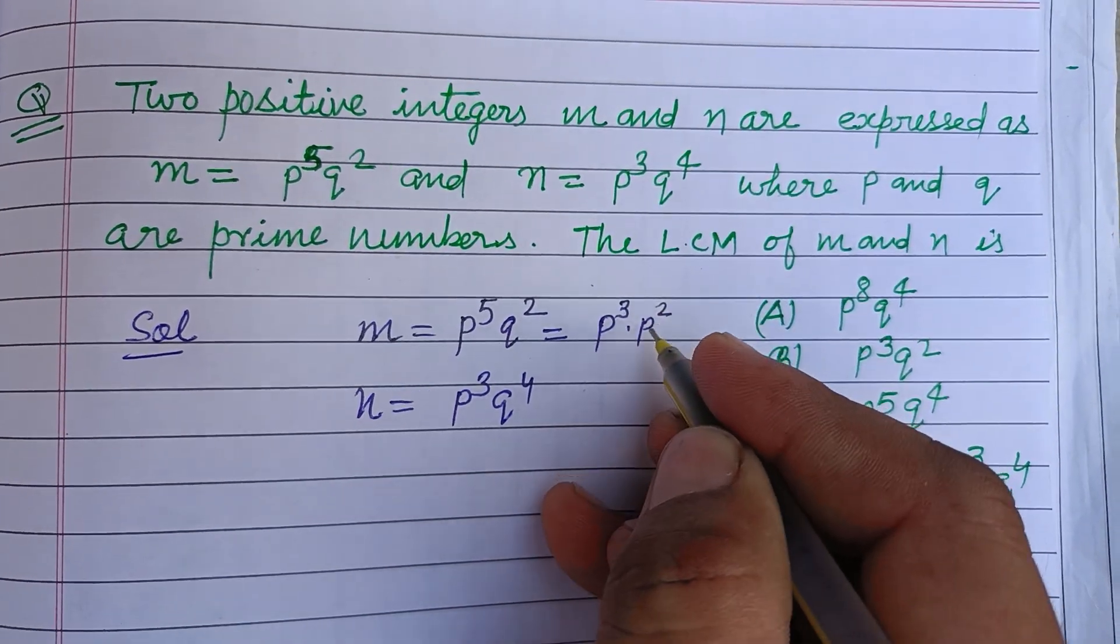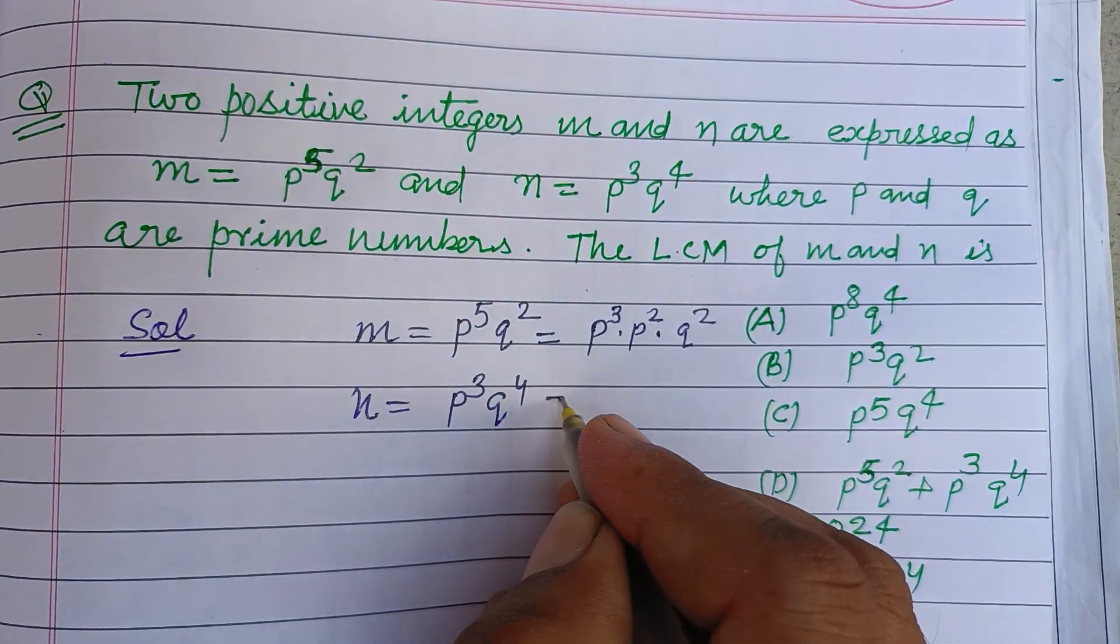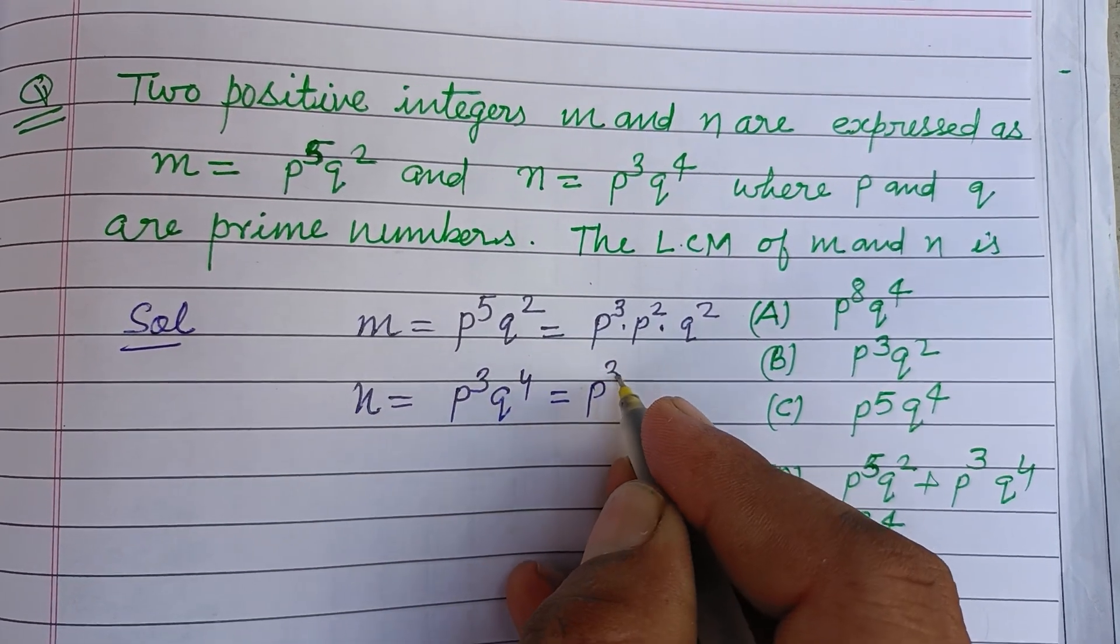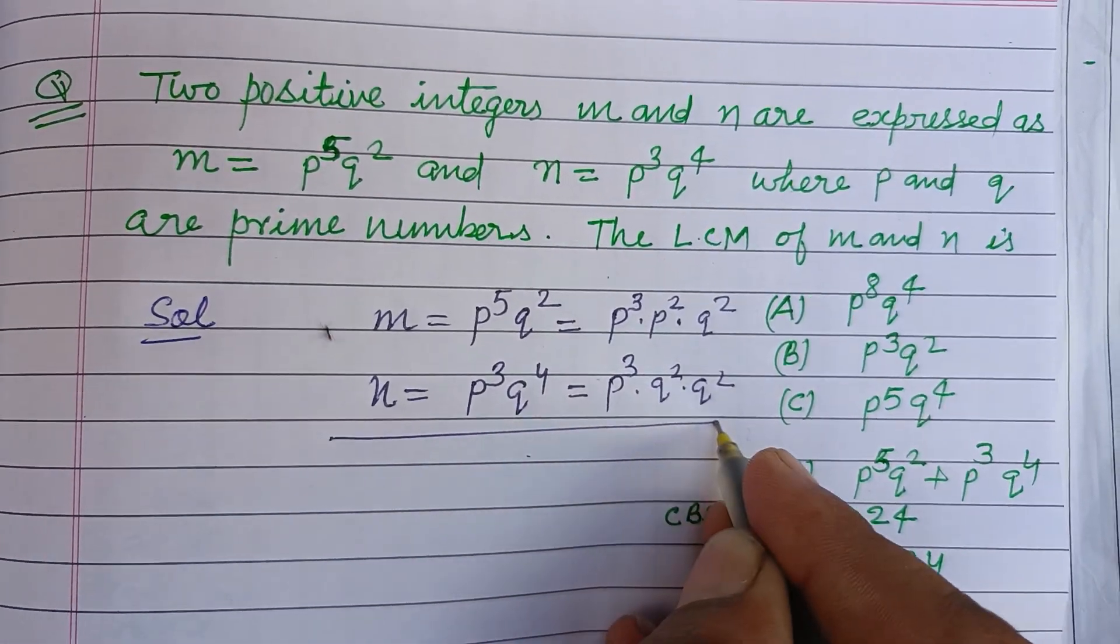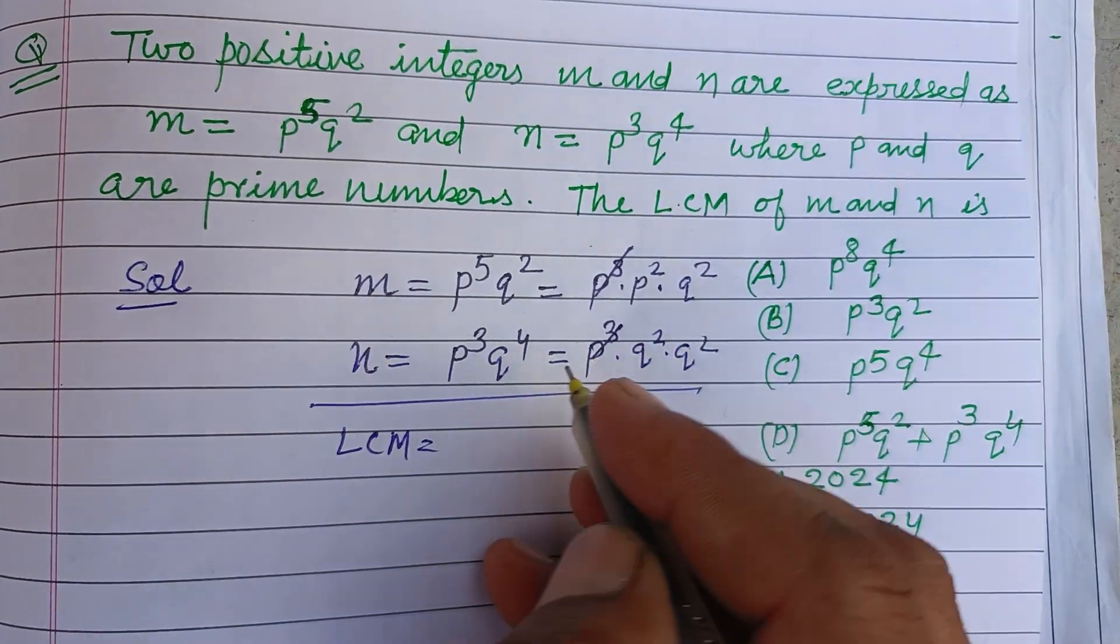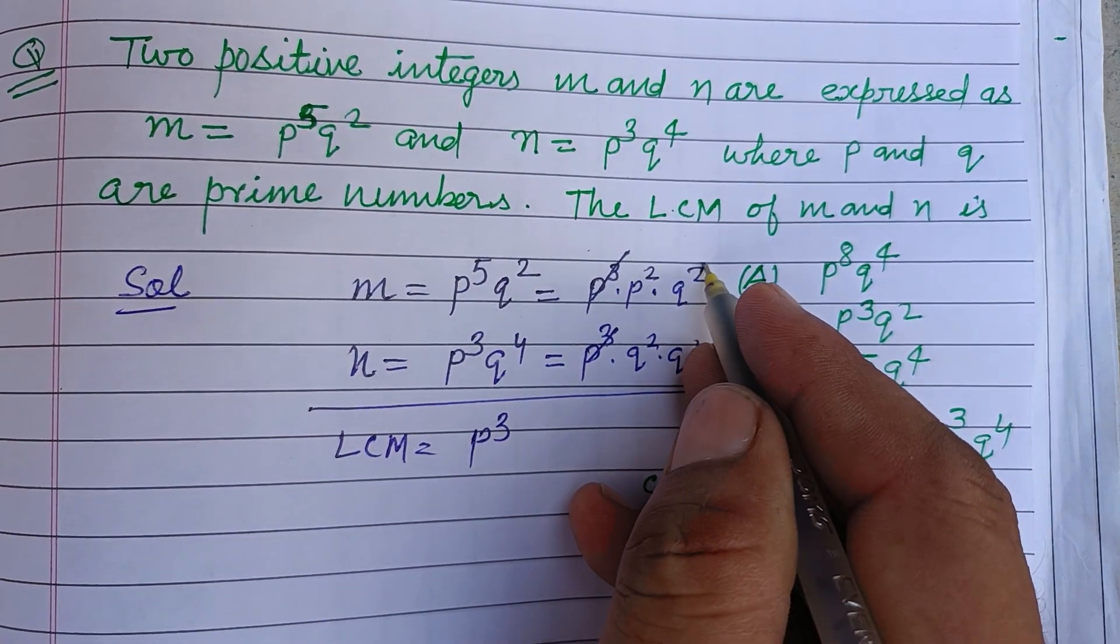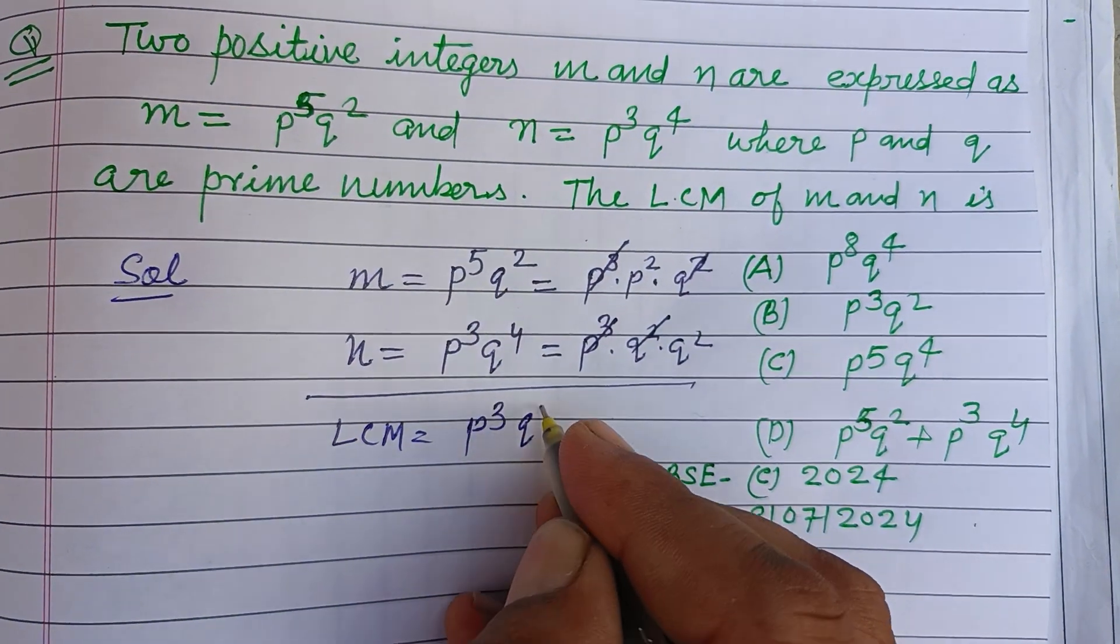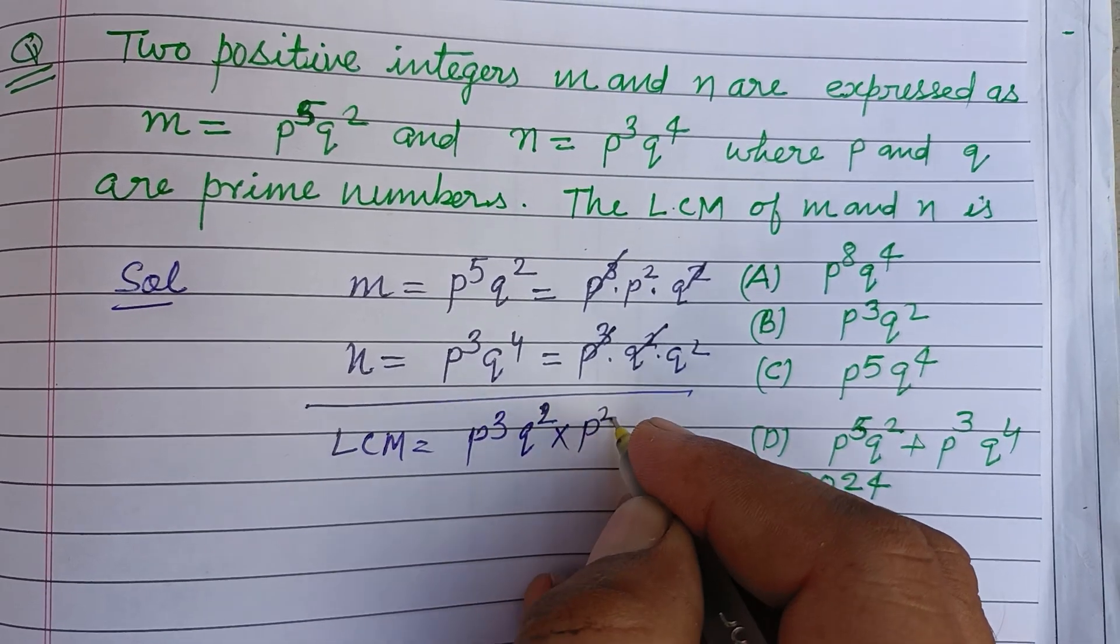And this as p q q square into q square. Now LCM of these - because p q p q is same, so we take p q here. Q square, q square same, we take q square. Now what remains, we take p square into q square.